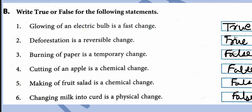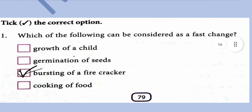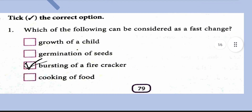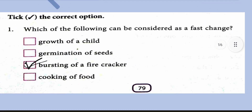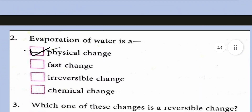Making of fruit salad is a chemical change — false. Changing milk into curd is a physical change — this is false. Which of the following can be considered a fast change? Bursting of a firecracker is the right option.